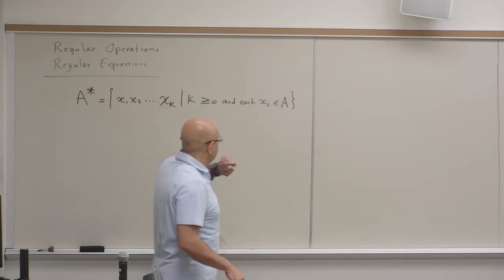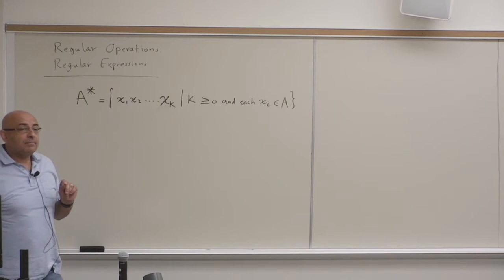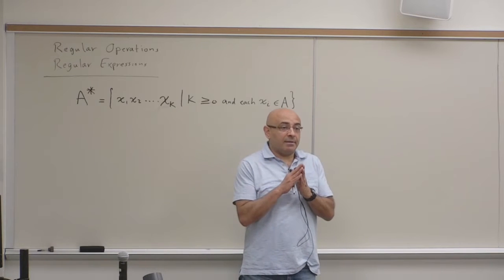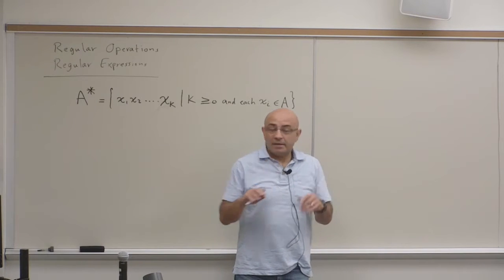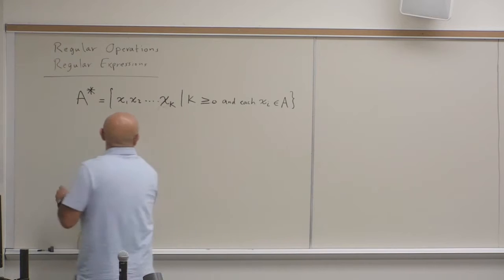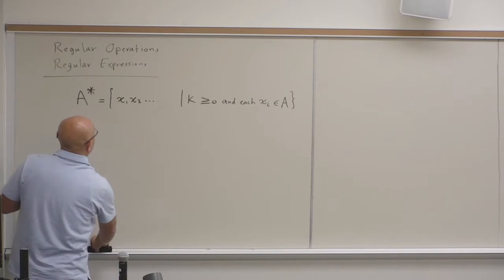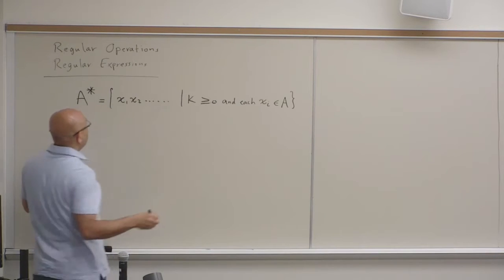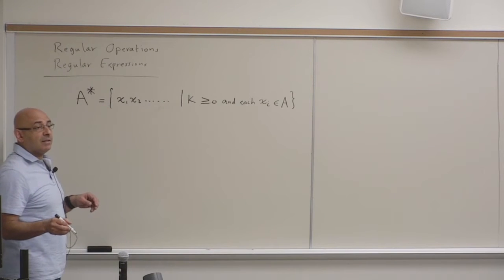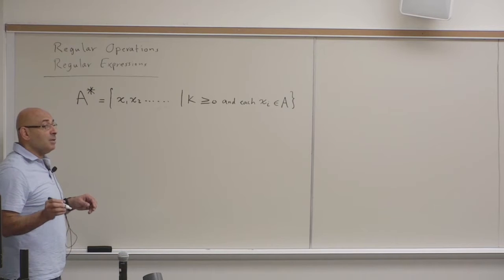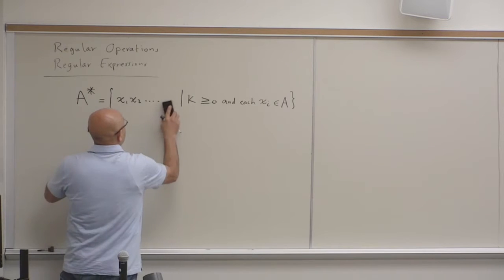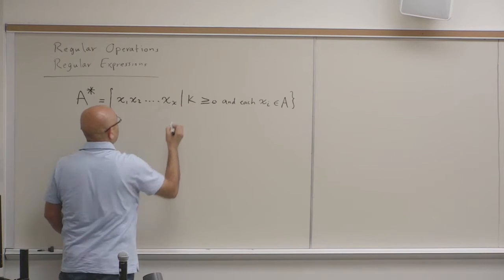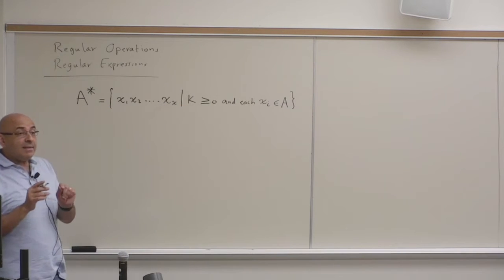Let me explain this idea. When you define a string, each string must have a finite length. What I did last time — allowing an infinite-length string — was wrong. A string cannot be of infinite length; a string must have a finite length, but the length is unlimited.